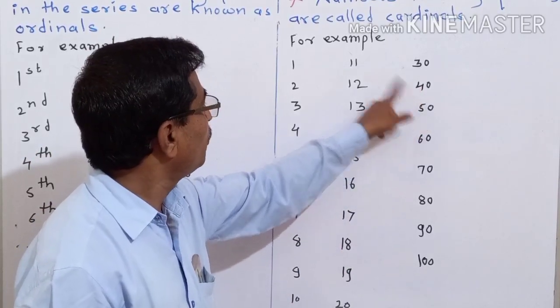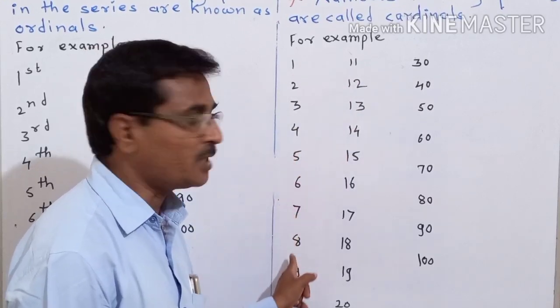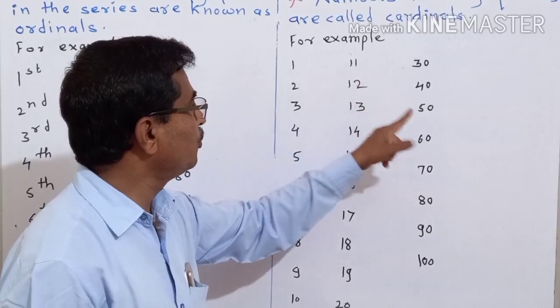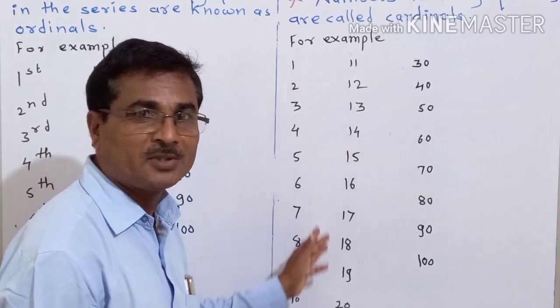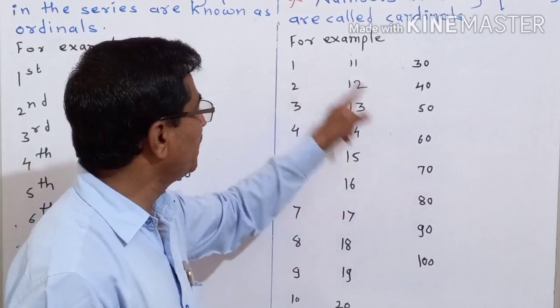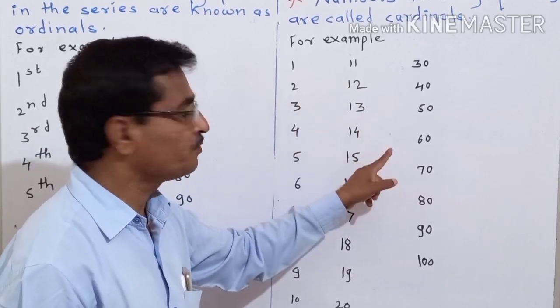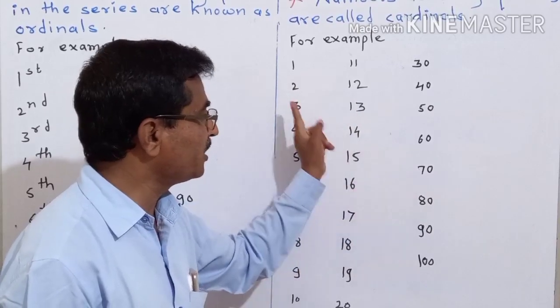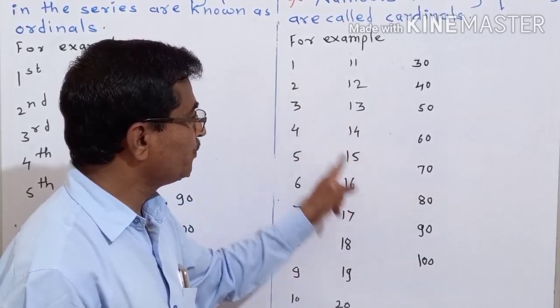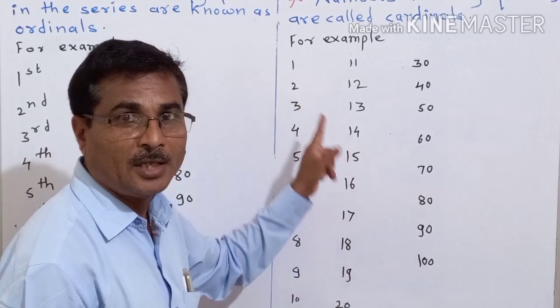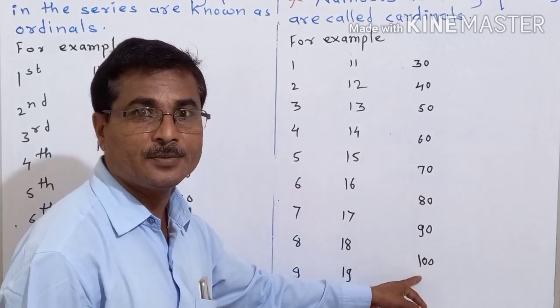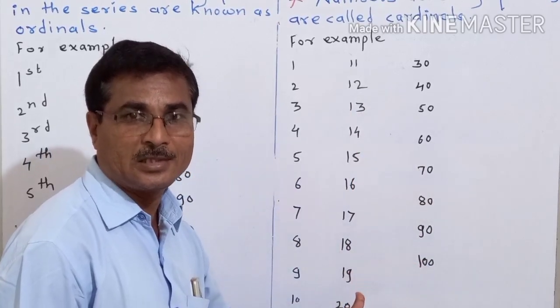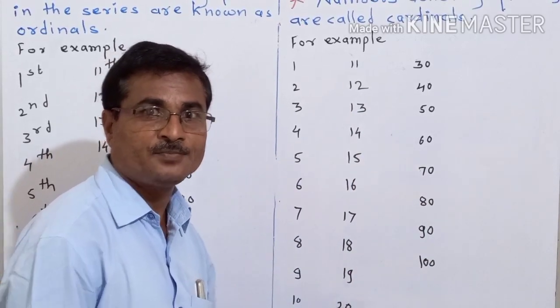41, 42, 43, 44, 45... 51, 52, 53, 54... like this: 71, 72, 73, 81, 82, 83... 91, 92, 93... 100. You have to read the cardinals like this, understand?